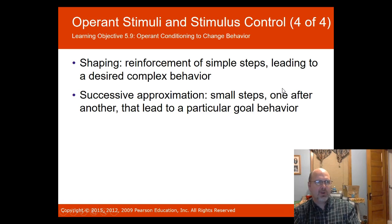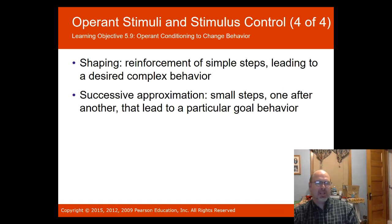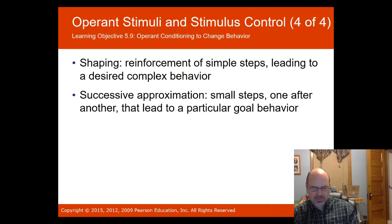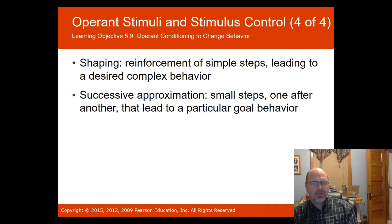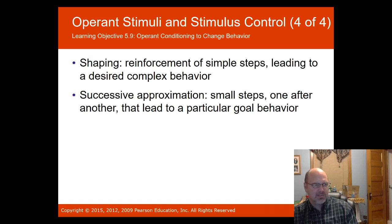Shaping is used to teach complex skills by breaking them down into simpler steps leading to a desired complex behavior. An example from the textbook is teaching a cat to use the toilet instead of a litter box. Successive approximations are small steps, one after another, that lead to a particular goal behavior.